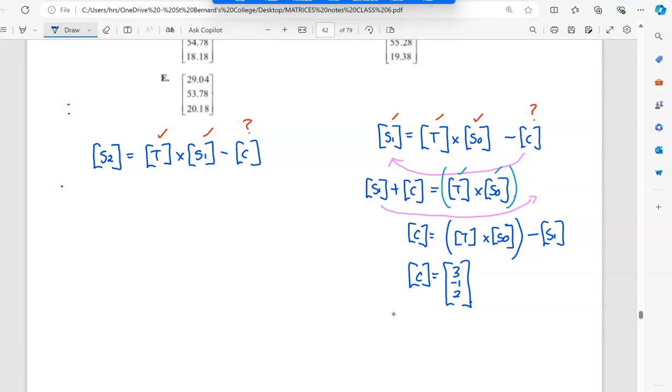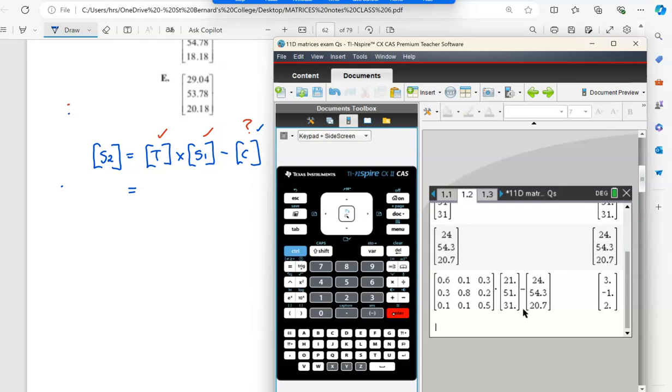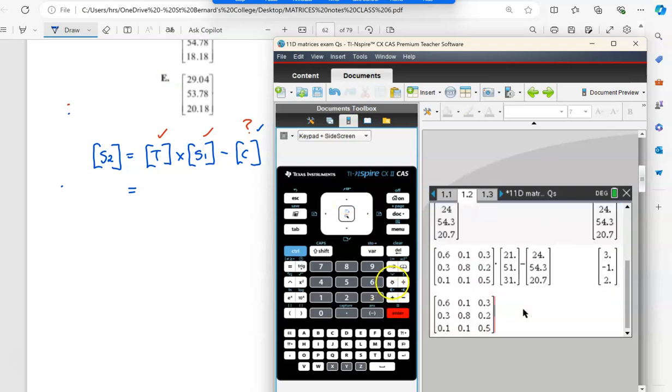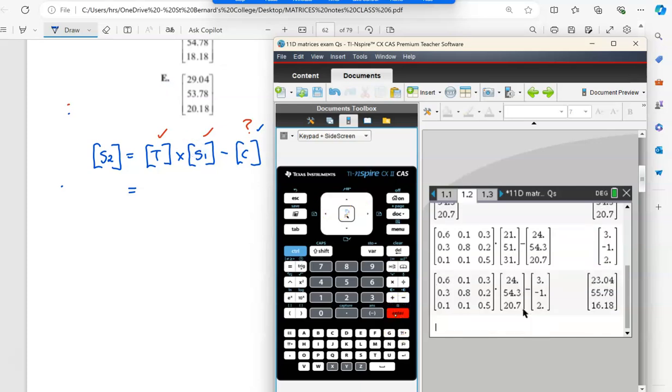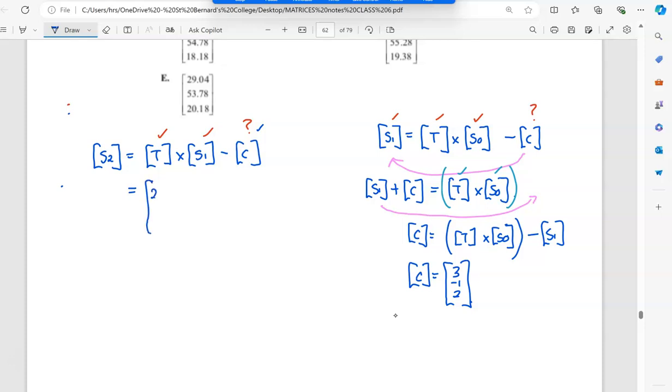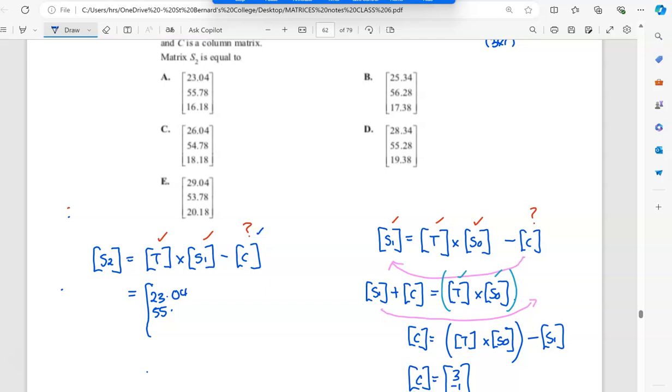So now I can go and do this because I now have that. So let's go find that. So it would be the transition, I'm just going to highlight it, times S_1, which was the 2,4,0. And then I'm going to minus the C, which is that one there. So I press enter. And I get 23.04, 55.78, I think it was, and 16.18. Okay. So it ends up being A.